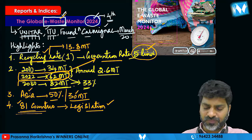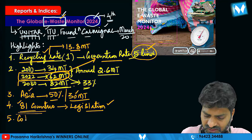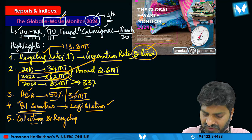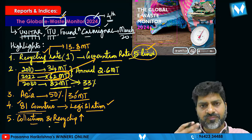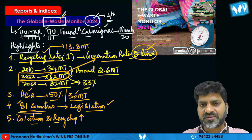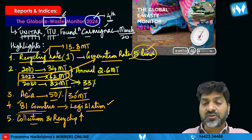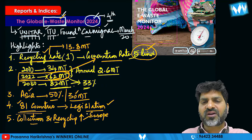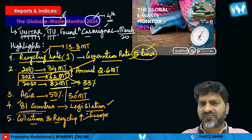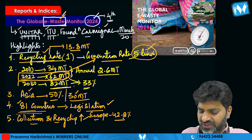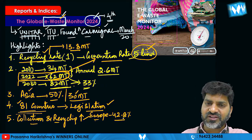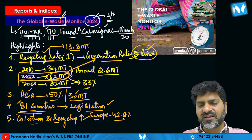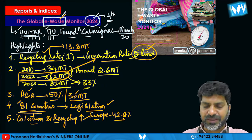Europe has the best collection and recycling rate — around 42.8%. European nations have more advanced and proper recycling infrastructure and environmental policies. In contrast, Africa has only around 1% collection and recycling rate.